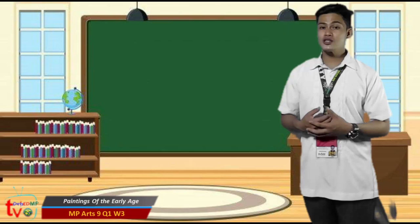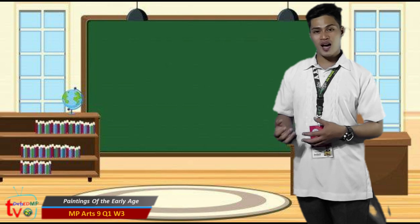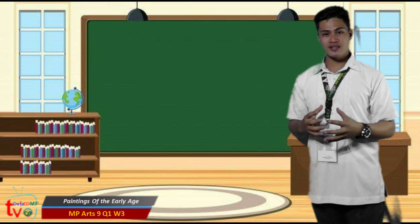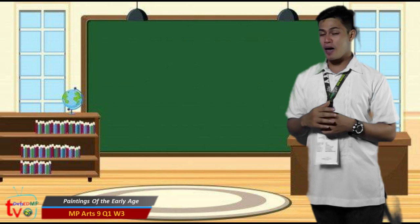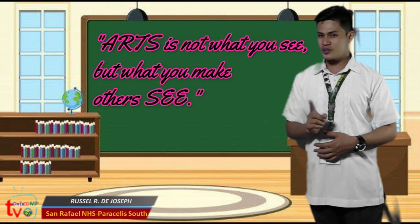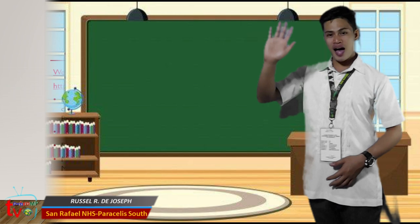Paintings from the Gothic era — paintings have been confined to the illumination of manuscript pages and the painting of frescoes on the walls of churches in a cosmopolitan style: elegant, modern, and sophisticated. Now, to summarize what you have learned about the lesson, let's answer this activity. Good luck! Congratulations, learners, for joining me on this virtual time travel. See you in the next episode as we talk about sculpture and architecture of the early age. I am Teacher Russell, saying: Art is not what you say, but what you make others say. Have a good day! Goodbye!